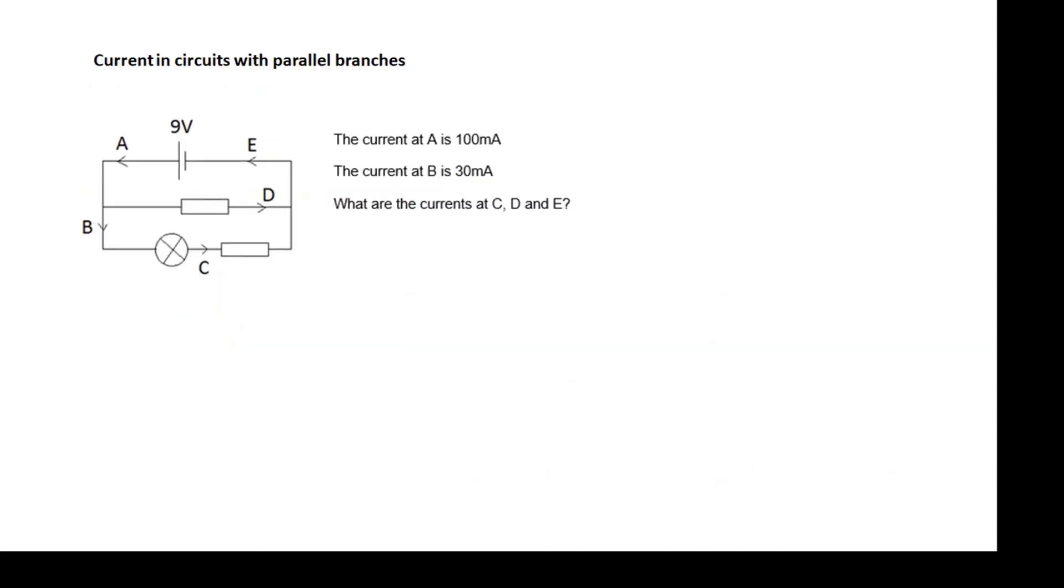Now parallel branches. I said that in a series circuit, the current is the same everywhere. In a parallel branch, a circuit with parallel branches, the current will split. So looking at this diagram, the current at A is 100 milliamps, the current at B is 30 milliamps, so what are the currents at C, D, and E?